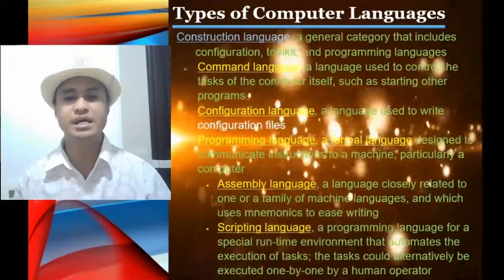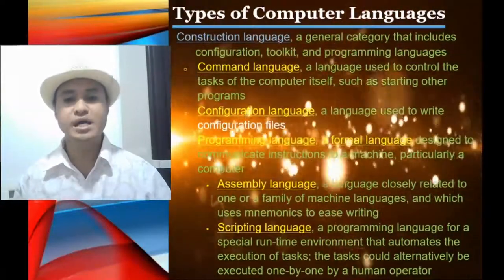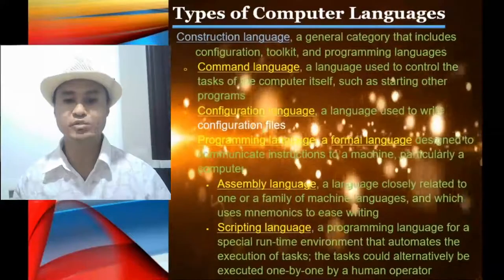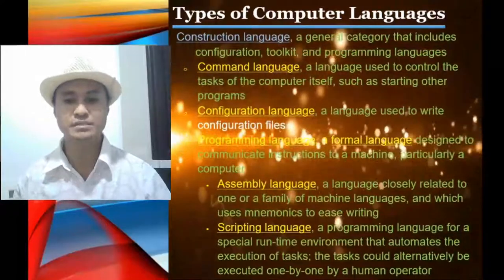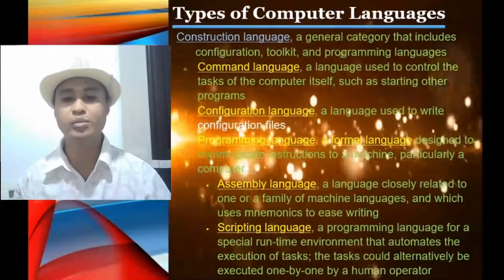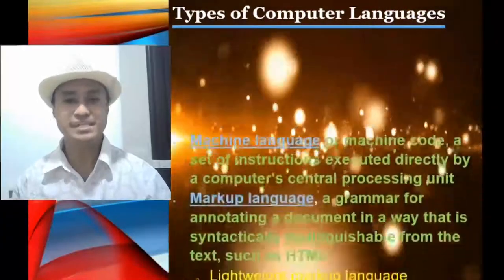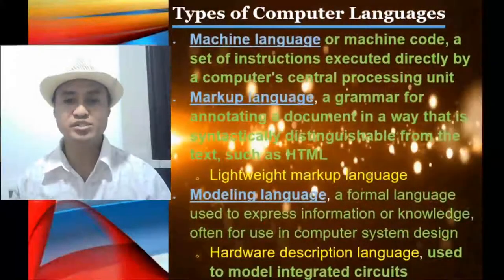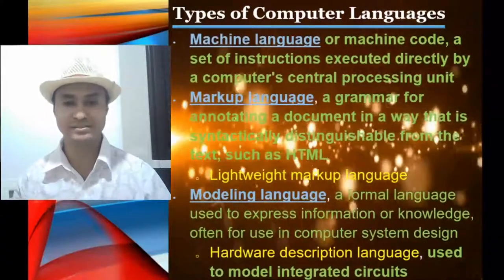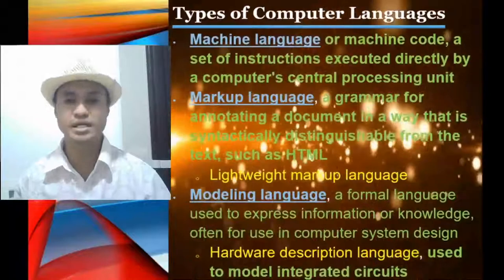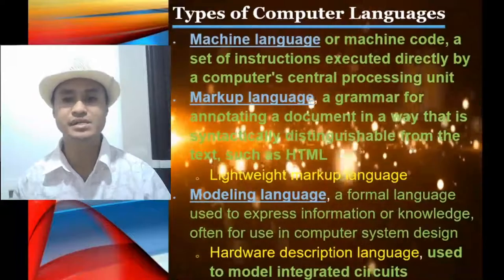Programming language has sub-languages including assembly language, a language closely related to one or a family of machine languages that uses mnemonics to ease writing. Scripting language is a program language for a special runtime environment that automates the execution of tasks — tasks that could alternatively be executed one by one by a human operator. Machine language or machine code is a set of instructions executed directly by a computer's central processing unit.